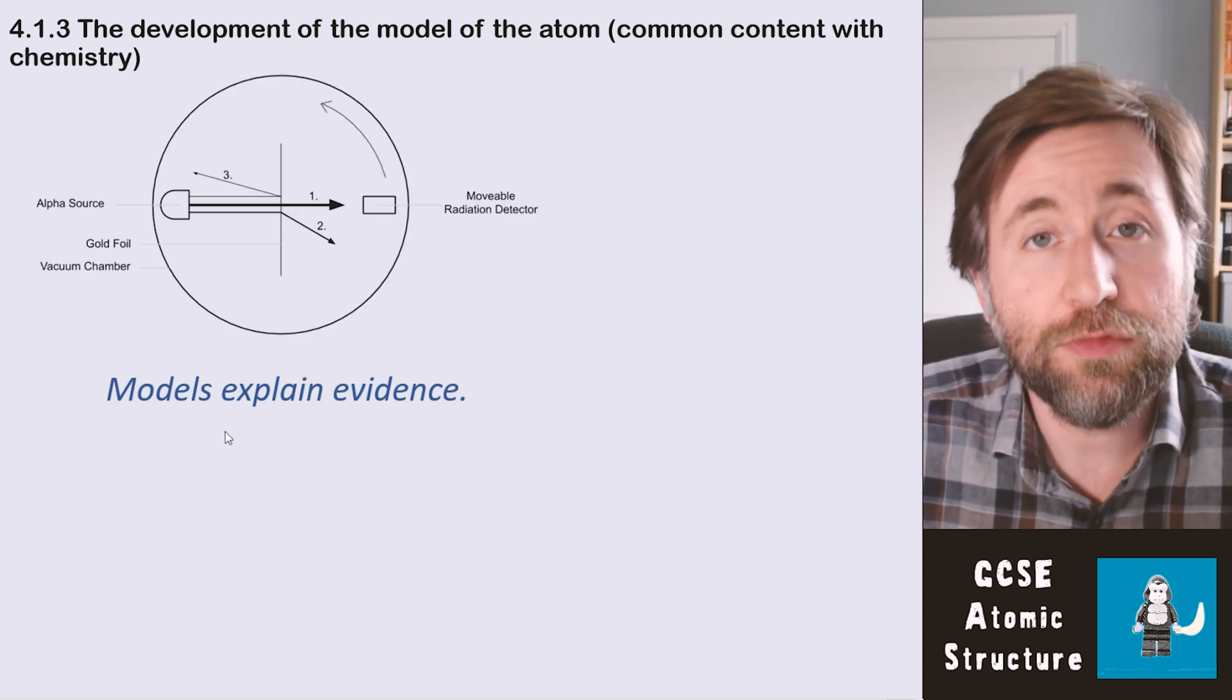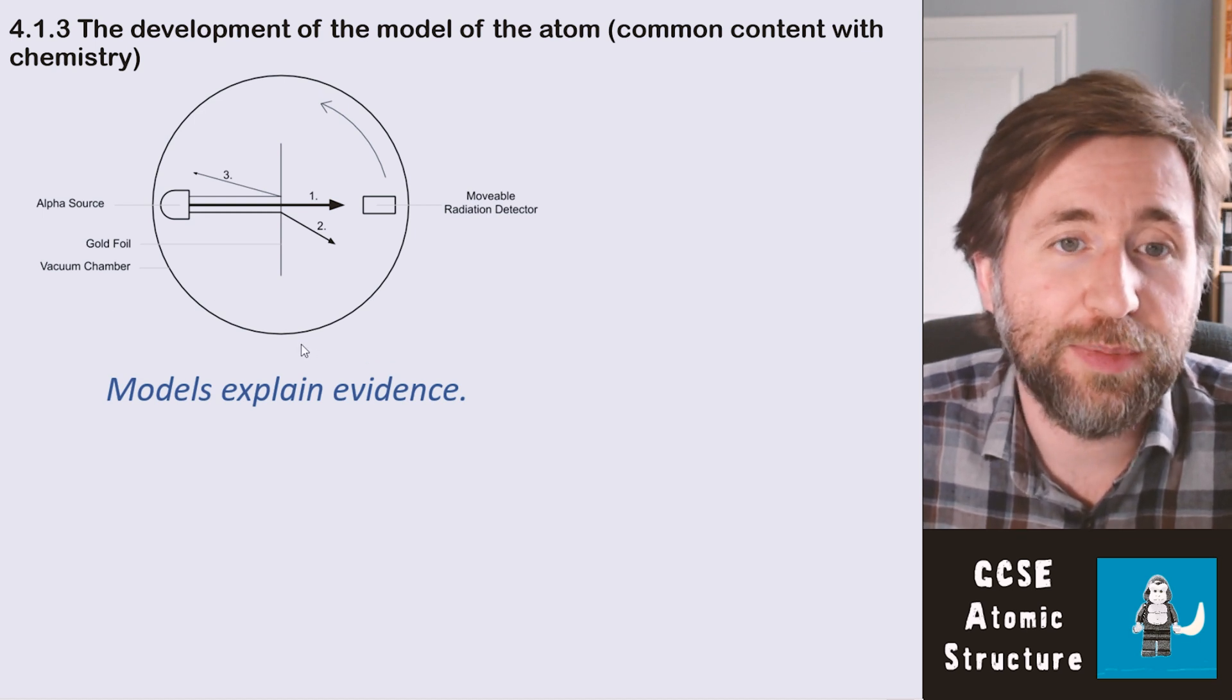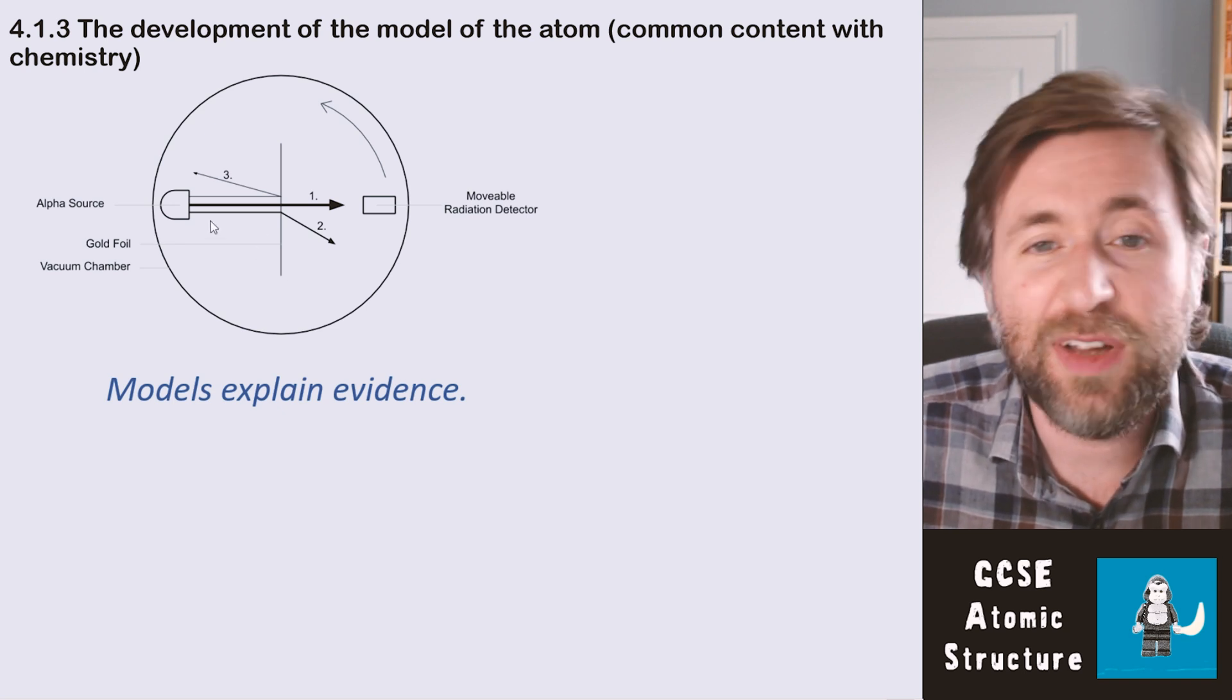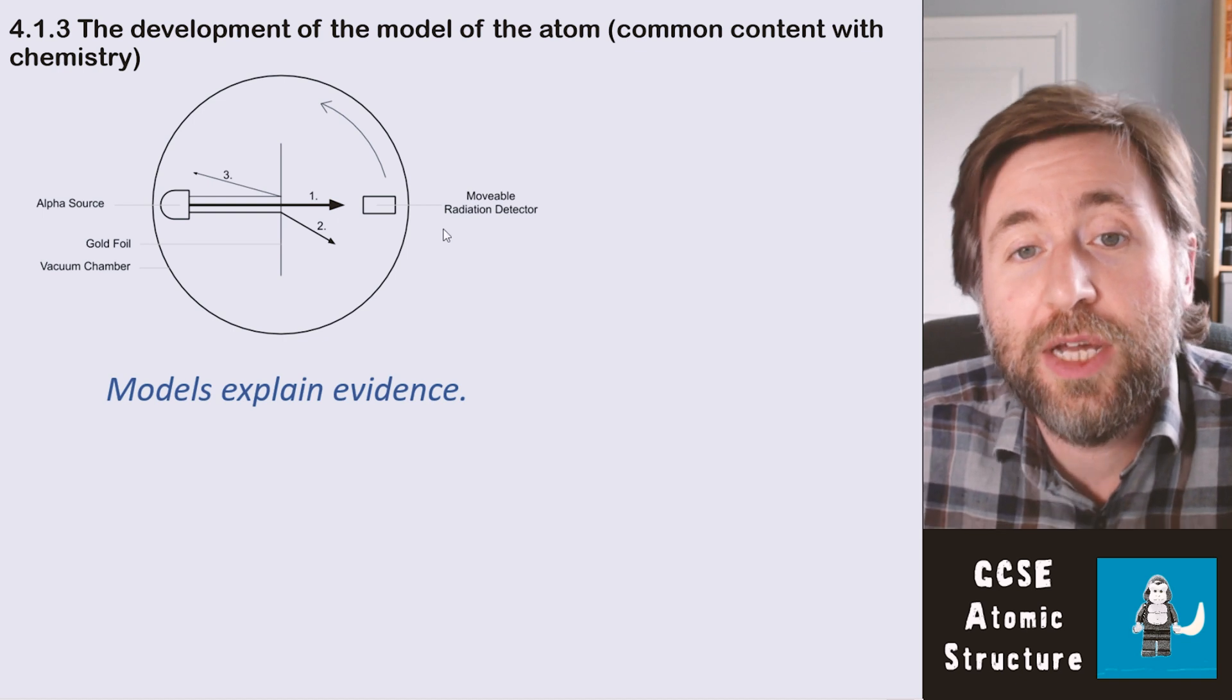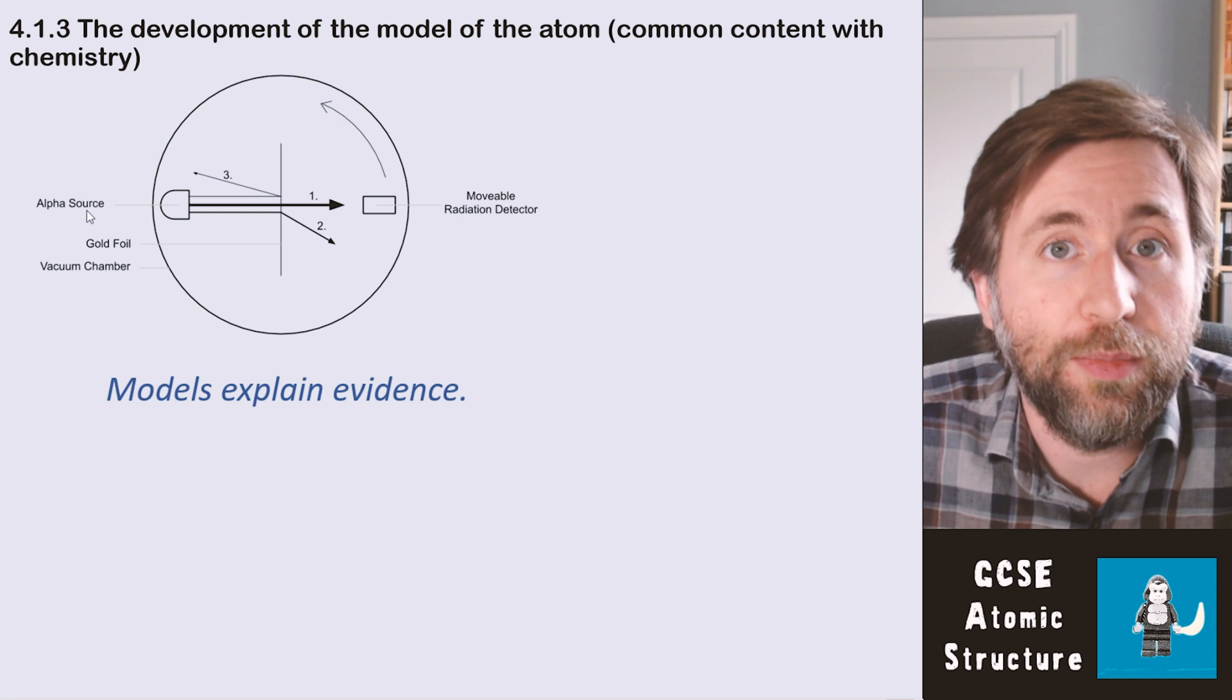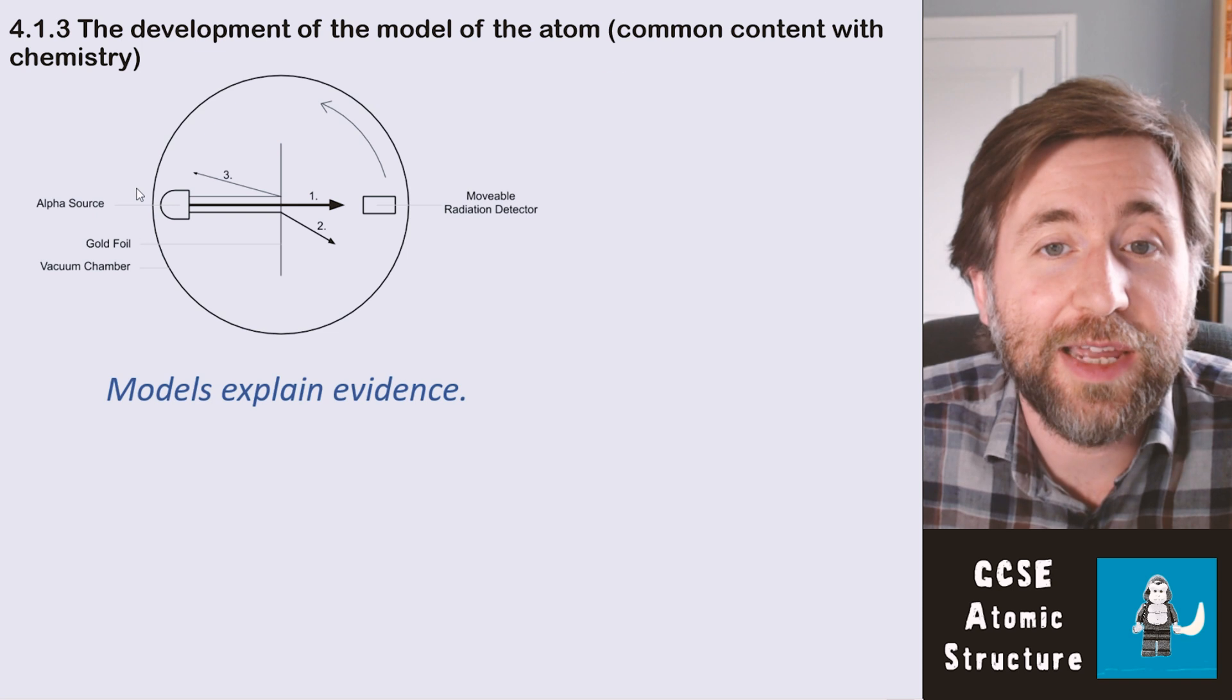Rutherford's evidence came from this experiment, the alpha particle scattering experiment. He fired some alpha particles at a really thin piece of gold foil and he found that most of them, as he was expecting with the plum pudding model, would go straight through. But some of them were deflected—that's pathway number two—and some of them miraculously, amazingly, bounced straight back. Some of them came back the way they came.